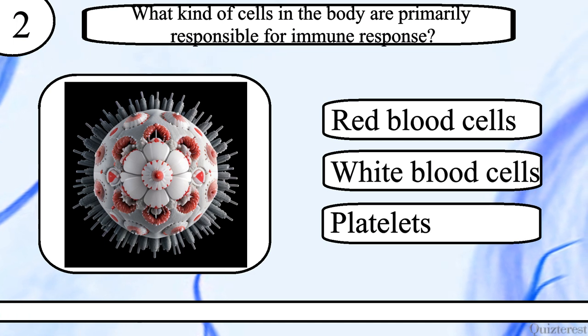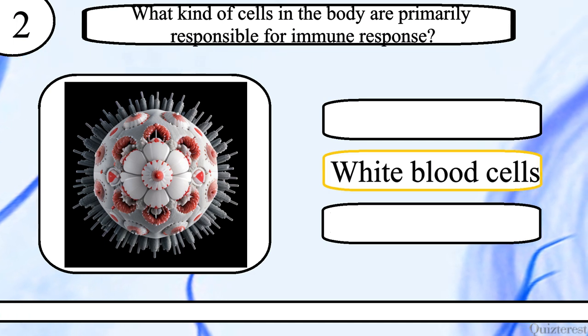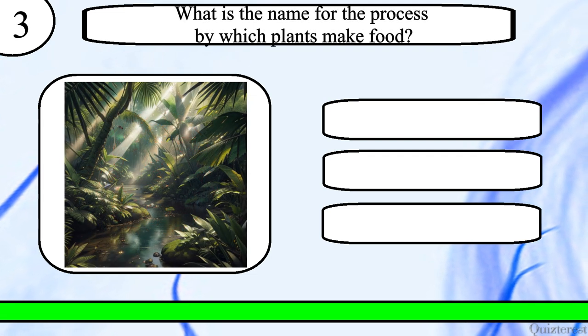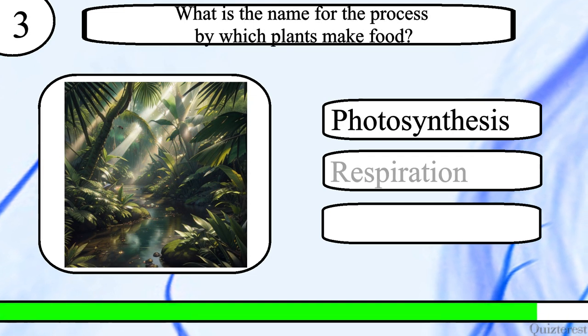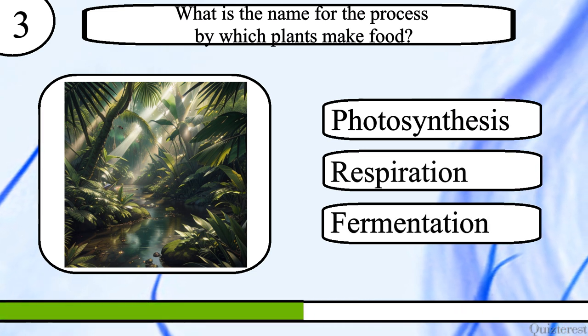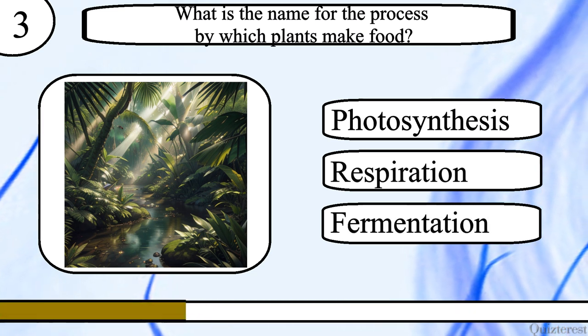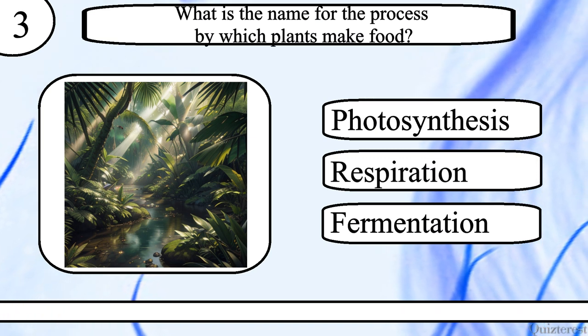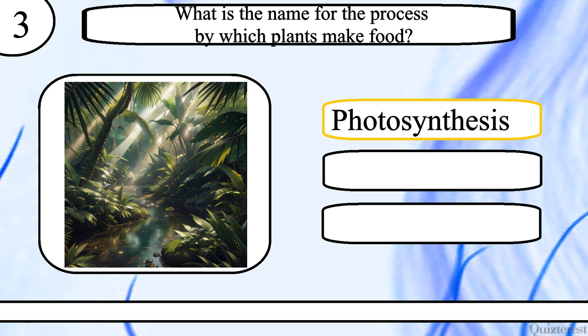The correct answer is white blood cells. Question 3. What is the name for the process by which plants make food? Photosynthesis, respiration or fermentation? The correct answer is photosynthesis.